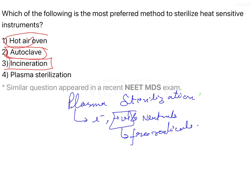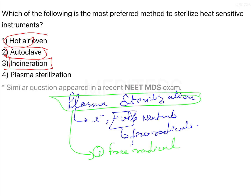Plasma sterilization operates synergistically via three mechanisms. The first mechanism is free radical interaction, which comes from the positive ions. The second is UV radiation effect — the radiation produced in this process. And the third one is volatilization.